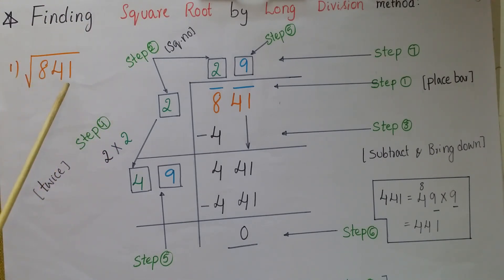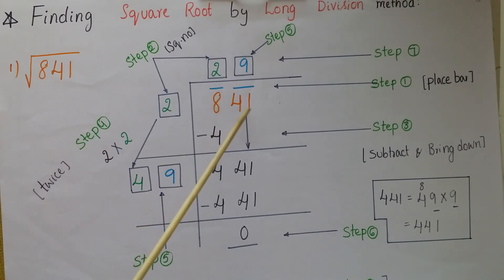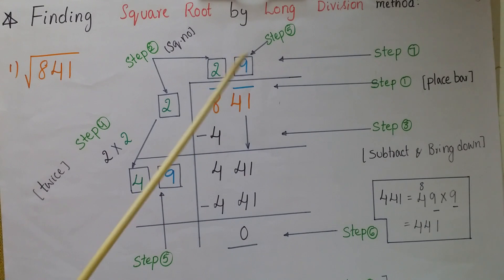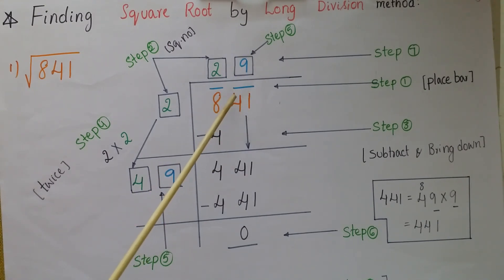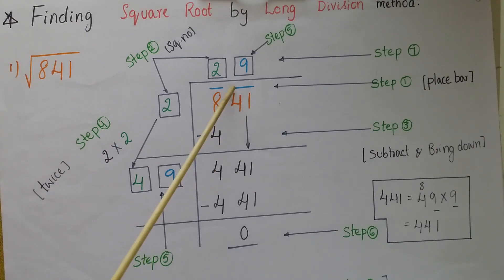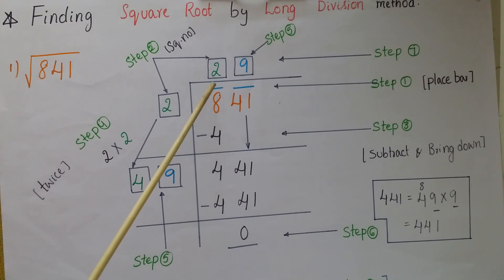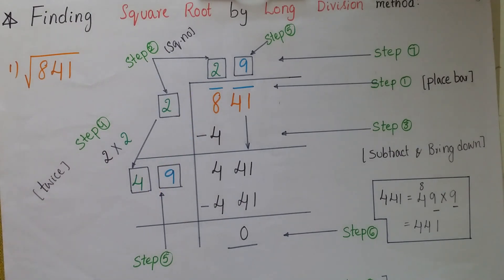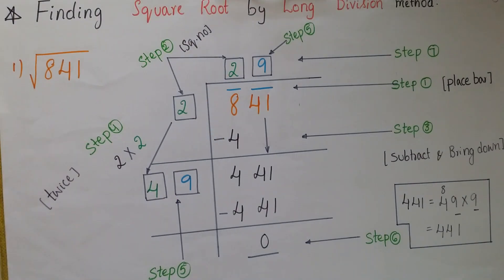Suppose we want to find the square root of 841. Write the number 841. In the first step, place bars over every two digits starting from the units digit. The unit digit is 1, so take two digits: 1 and 4, and place a bar over them. The remaining digit is 8, so place a bar over it.